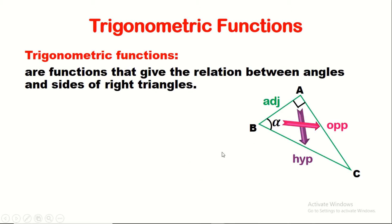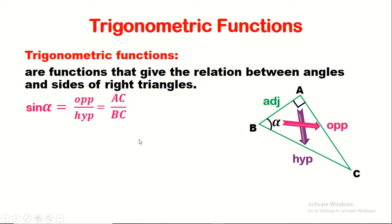The first trigonometric rule is sine alpha. Sine alpha is equal to opposite over hypotenuse. So here sine alpha is AC over BC, the hypotenuse. Note that sine alpha is less than or equal to 1, because the longest side in any right triangle is its hypotenuse. So AC is less than BC, meaning AC over BC is less than 1.